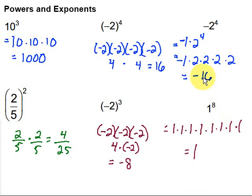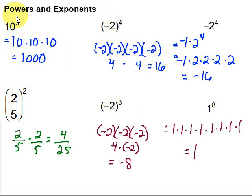One to any whole number power is just one. So to recap powers and exponents: the base is the number being multiplied over and over, the exponent is that small number up to the right, and the whole thing together we refer to as a power. Hope this video was helpful — keep working hard on your math, you can do it.